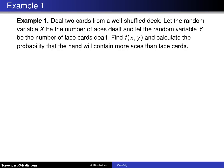Deal two cards from a well-shuffled deck. Let the random variable X be the number of aces dealt and let the random variable Y be the number of face cards dealt. Find f(x,y) and calculate the probability that the hand will contain more aces than face cards.